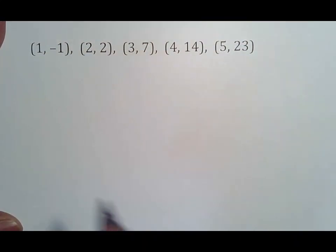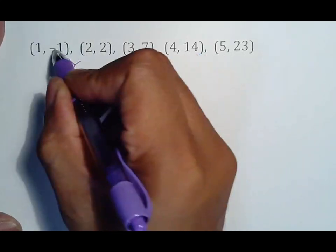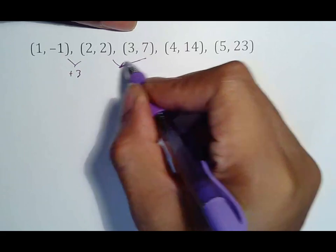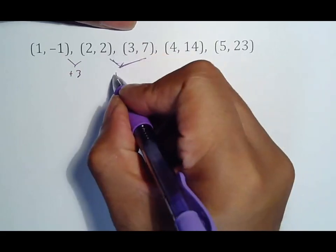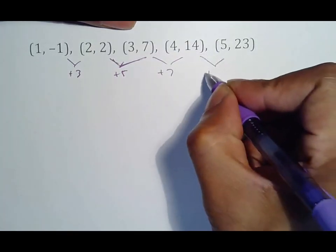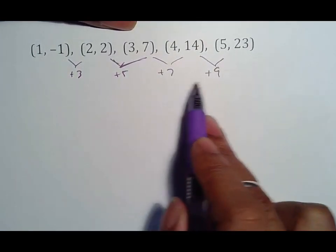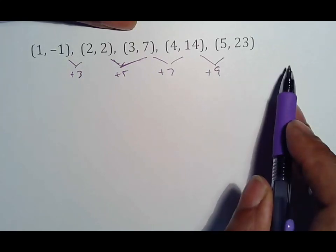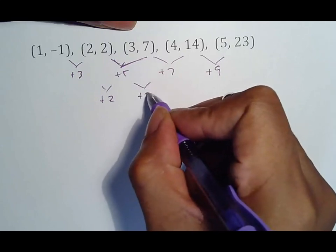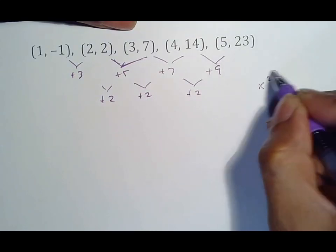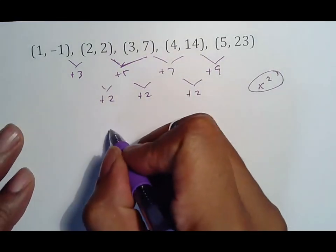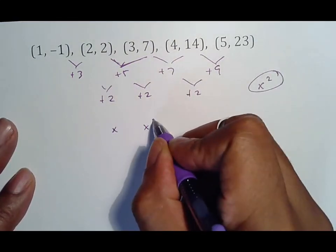Another example. 2 minus negative 1 is up 3. This is plus 5. This is plus 7. This is plus 9. Obviously, because it did not match on the first, it's not linear. It's not a regular x. But when you do your second check, it means that our base rule is x squared because it only took two checks. So, what we will do is make a table: x, our base, and y.